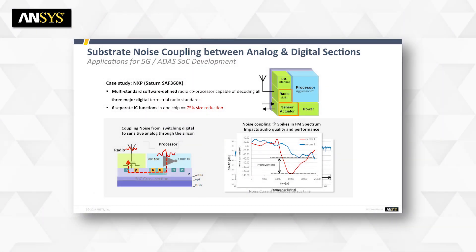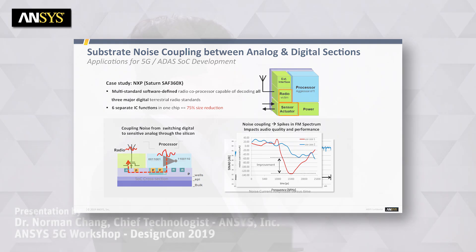Another issue is substrate noise interaction. For 5G designs, radios and sensor actuators coexist with digital processors. High switching noise from the processor propagates through the substrate and affects analog circuitry. For very sensitive 5G beamforming modules, radio frequency interference can shift the carrier frequency, making this an important concern.